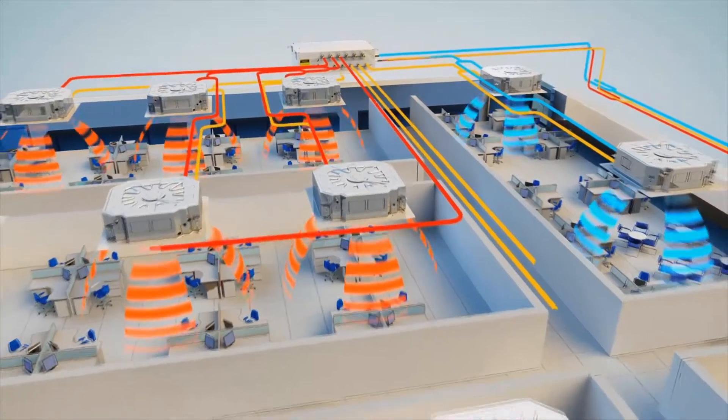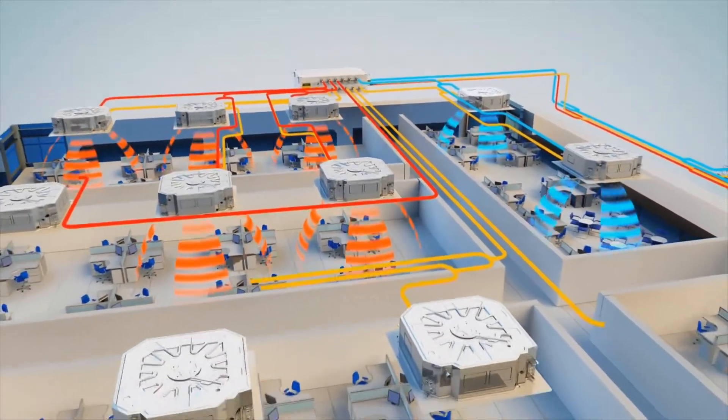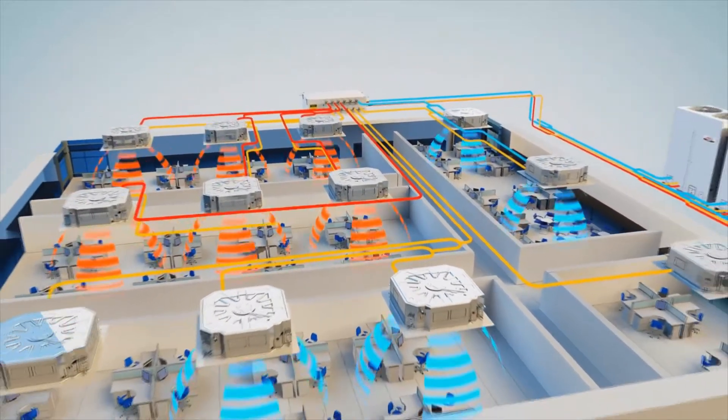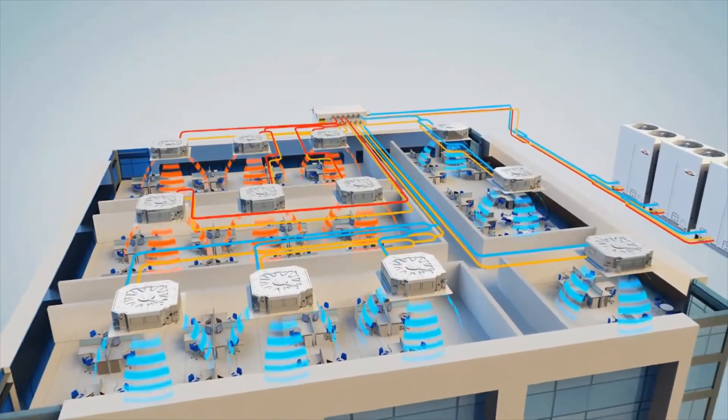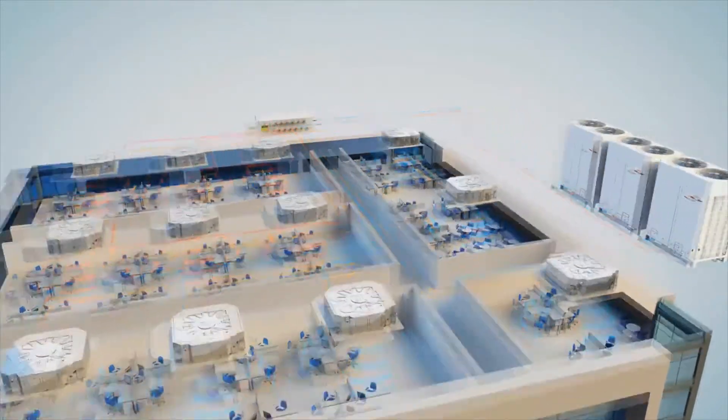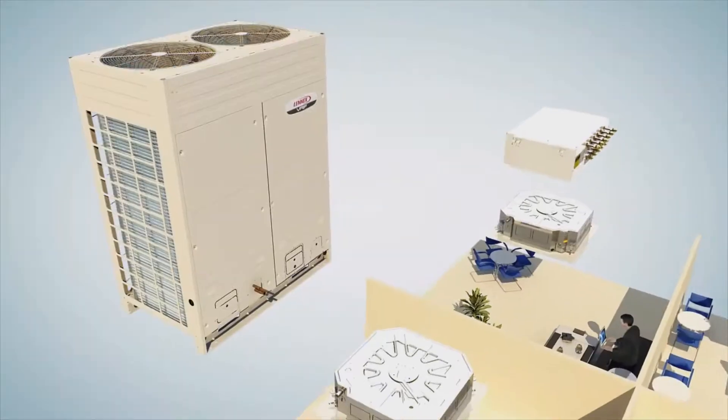In cooling mode, flow is reversed. The suction line opens allowing liquid refrigerant to flow into the indoor unit, evaporate via an electronic expansion valve or EXV and leave the unit as a low pressure gas.